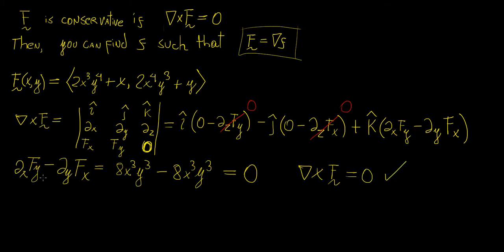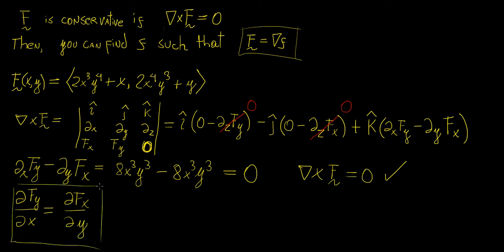We just proved that the vector field is conservative. In general, for any vector field of just two variables, if ∂Fy/∂x equals ∂Fx/∂y, then the vector field is conservative. The curl always reduces to just this condition for two-variable fields, and everything else is automatically zero because the z-component is zero. Taking the curl as a 3×3 determinant is the more general approach, applicable to three variables as well.